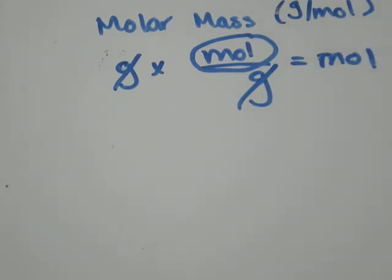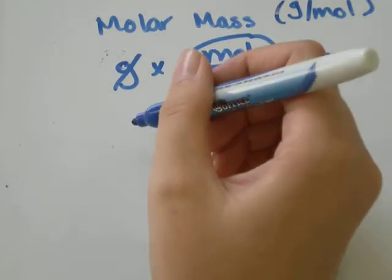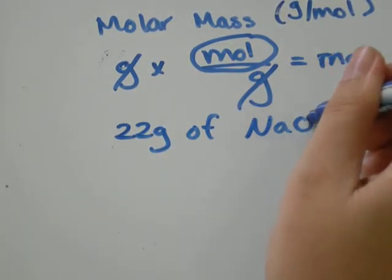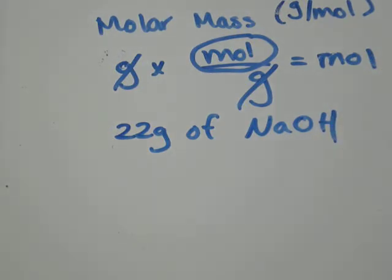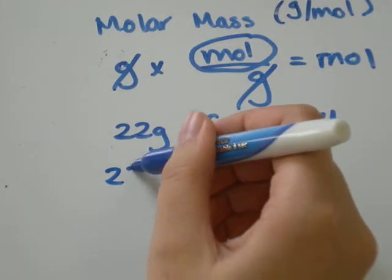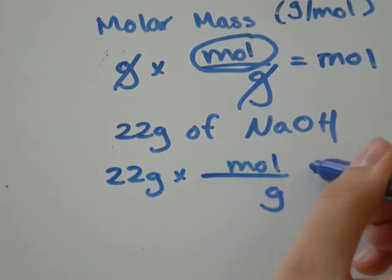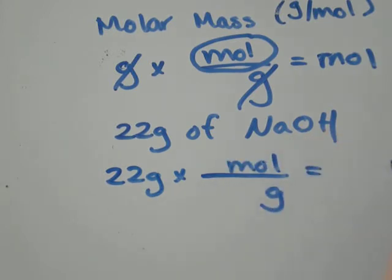Let's do 22 grams of, I don't know, NaOH. That sounds nice. So we will do the molar mass we need, so that when we do 22 grams times some grams per mole, we'll get an answer in terms of moles.